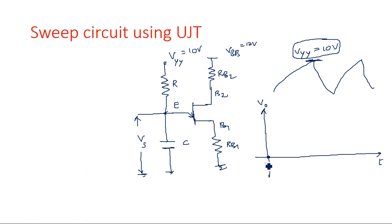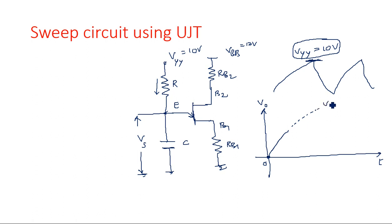Initially, the voltage across the capacitor is zero and the UJT is in the off state. When the UJT is off, the current from the resistance goes directly to the capacitor and not into the emitter junction because it is open-circuited. So the capacitor charges through the resistance, and the maximum voltage in that path is VYY. The capacitor charges toward VYY but the voltage across the capacitor is simultaneously applied at the base-to-emitter junction.